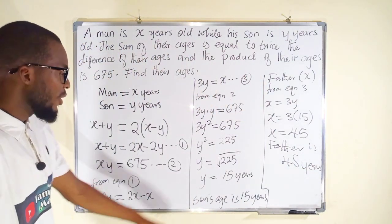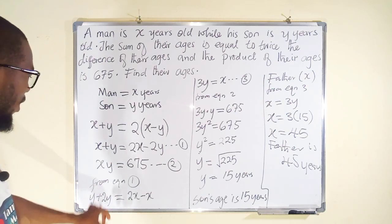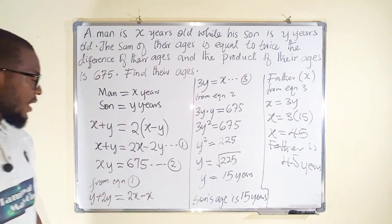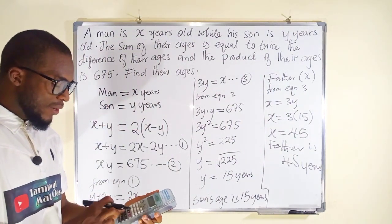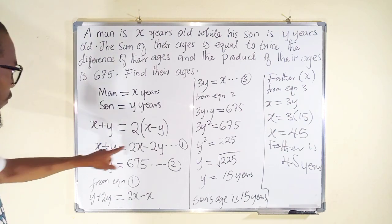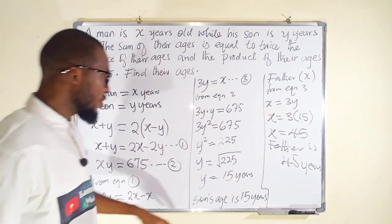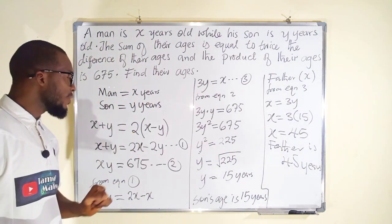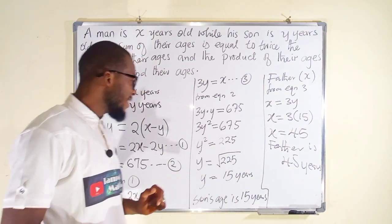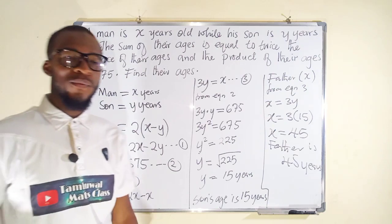We have obtained their corresponding ages: the son is 15 years and the father is 45 years. Let us verify: from Equation 2, 15 multiplied by 45 equals 675, which is correct. For the other condition, the difference of their ages is 45 − 15 = 30, and 30 multiplied by 2 is 60. The sum of their ages is 45 + 15 = 60, which equals 2 × (45 − 15). Both conditions check out. Thank you for watching, do have a nice day.